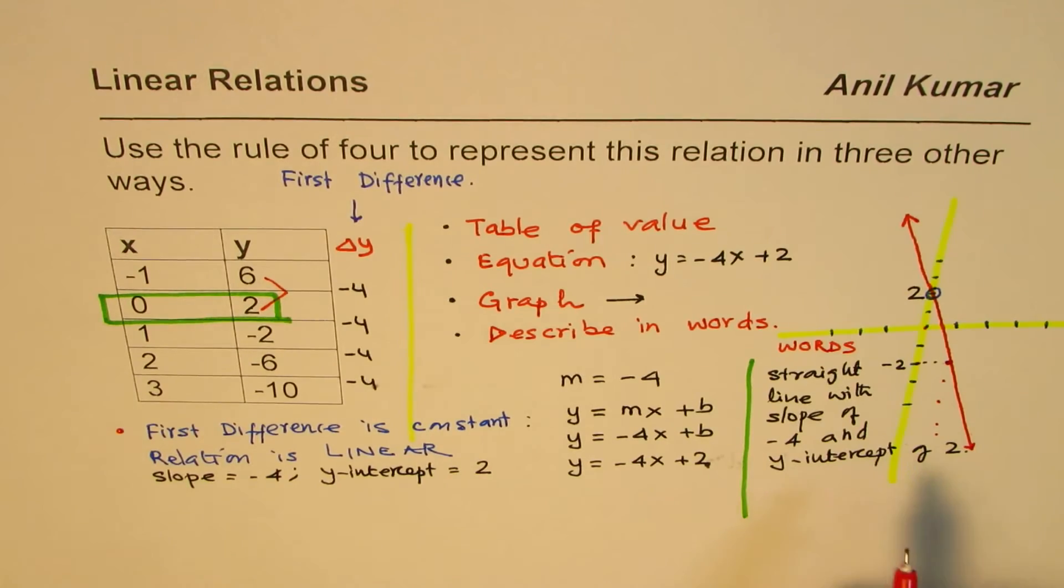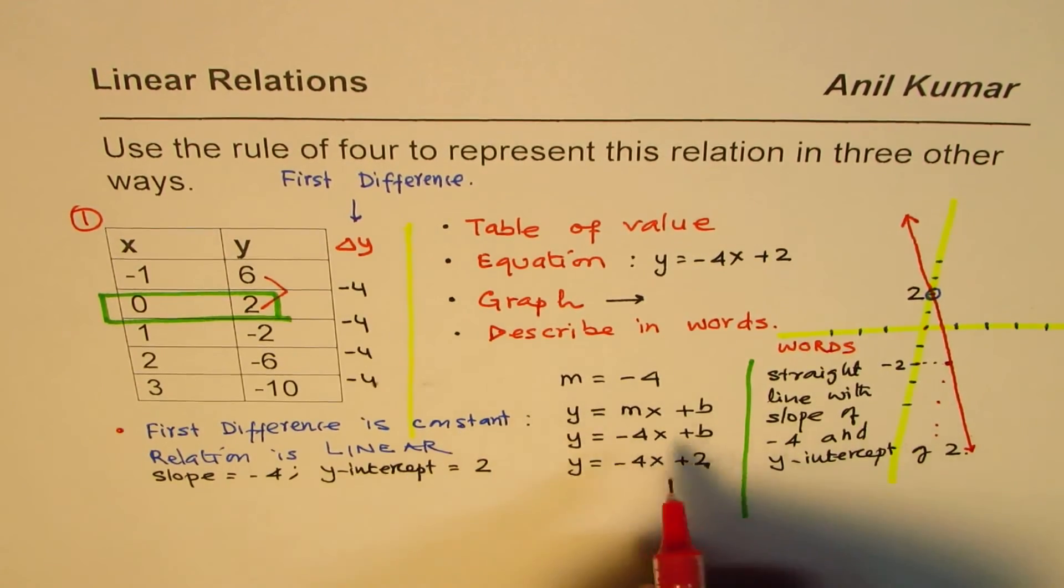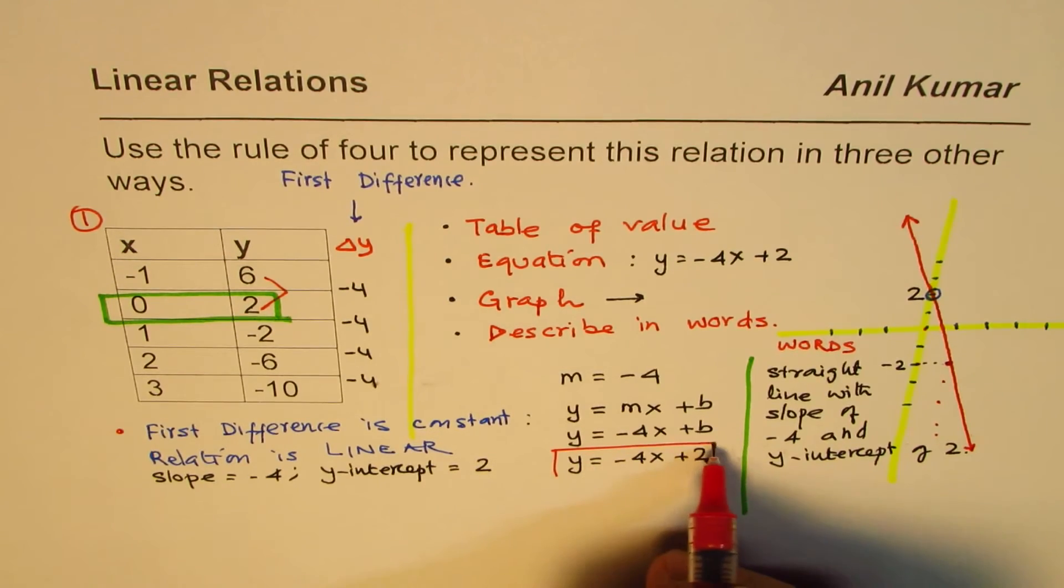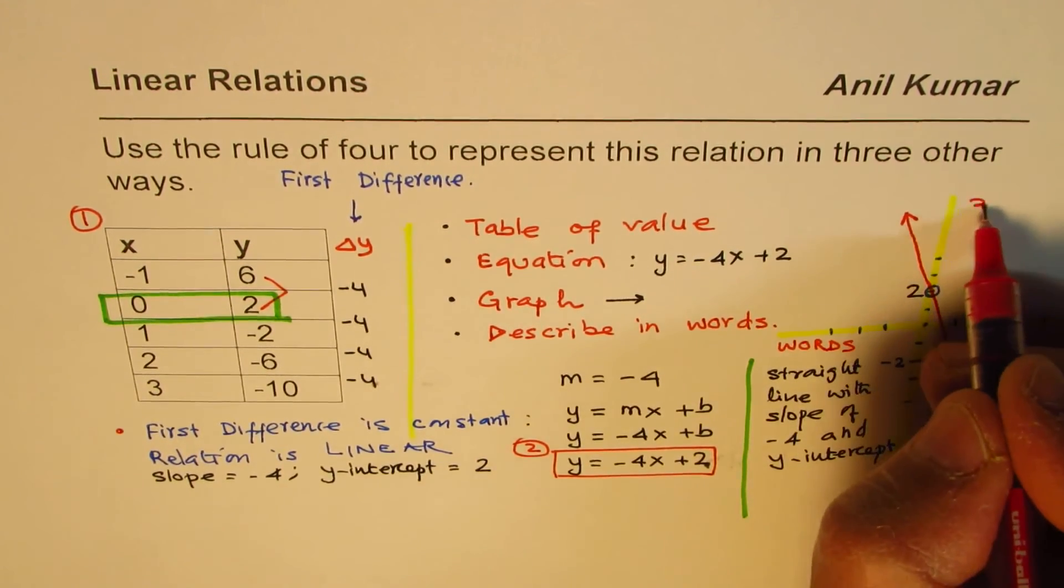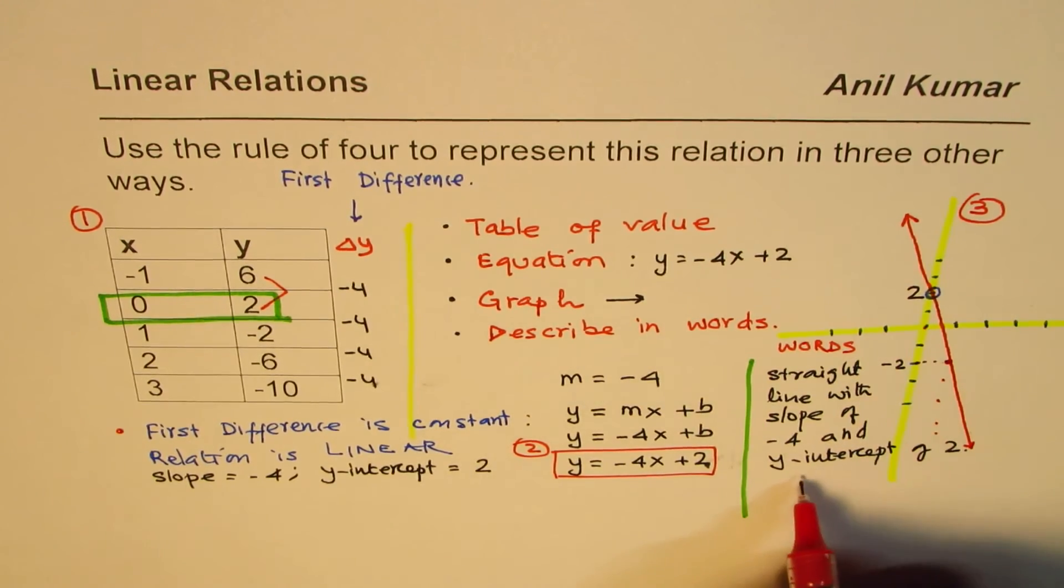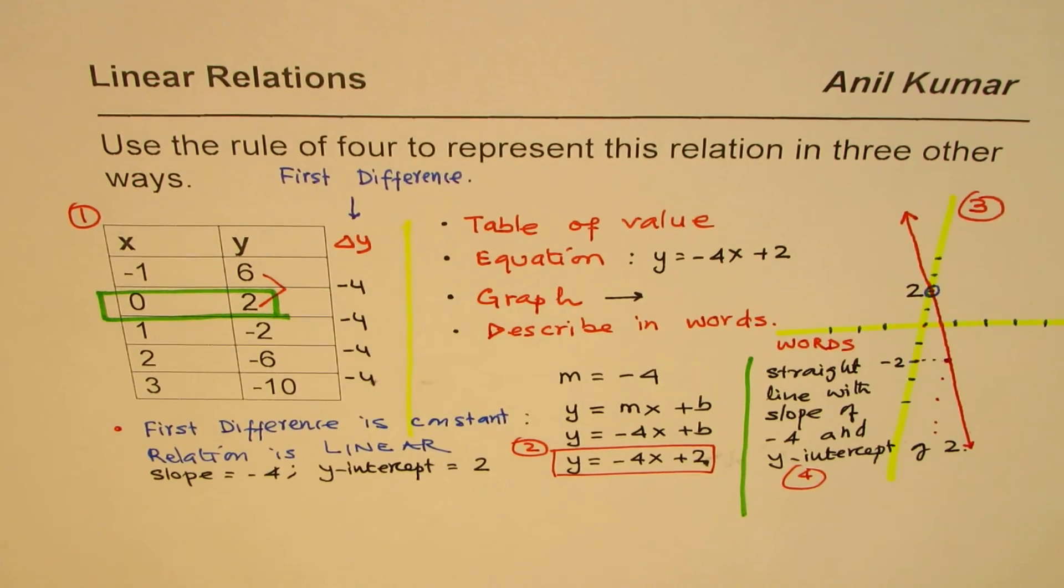So, these are 4 different ways. 1, the table of values. 2, the equation. 3, the graph. And 4, words. So, that is how you can define or describe any relation in 4 different ways. I'm Anil Kumar, and I hope that helps. Thank you, and all the best.